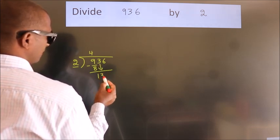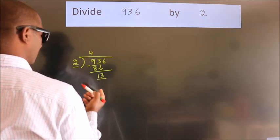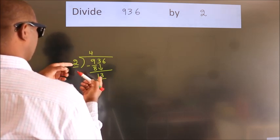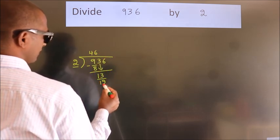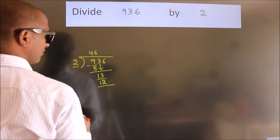After this, bring down the beside number. So 13 down. A number close to 13 in the 2 table is 2 times 6 equals 12. Now we subtract. We get 1.